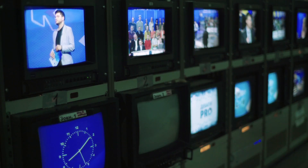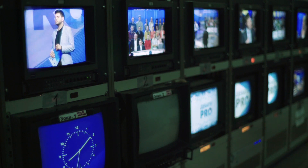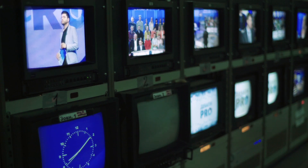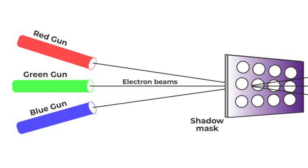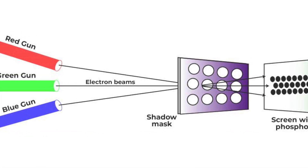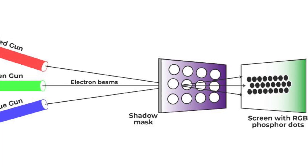The RGB color model was adopted by television and monitor manufacturers because it closely aligns with the way our visual system processes light. In the early days of color television, engineers needed a practical way to reproduce a wide range of colors using limited technology. RGB provided an efficient solution because it requires only three primary colors to generate the full color gamut. This efficiency was crucial in the design of CRT (cathode ray tube) screens, where three electron guns, each corresponding to red, green, and blue, could be used to produce images. Modern LCD and OLED screens have continued to use RGB, with tiny pixels made up of red, green, and blue subpixels.